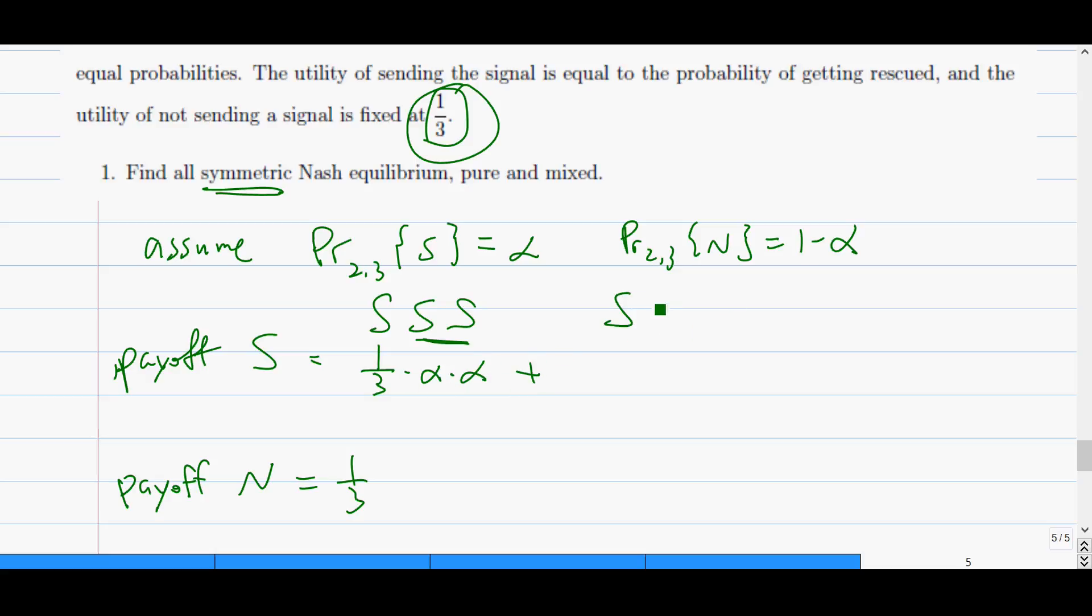And the second one is S. So I always send. And say the second player still sends and the last player does not send. And I get rescued with probability half, which is my utility. And this event happens with probability this. And similarly, I can get SNS, which is still I get rescued with probability half. That event happens with this probability.